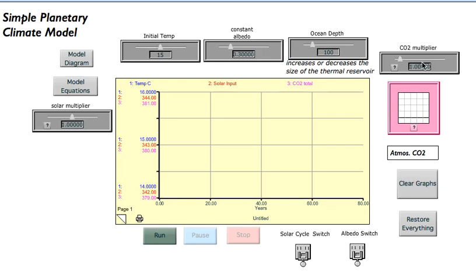It also has a CO2 multiplier that does the same thing to CO2 concentration. Initially set at 1, if I make it 2, instead of 380 parts per million CO2, we'd have 760—doubling it. If I set it to 0.5, we'd cut the CO2 concentration in half.